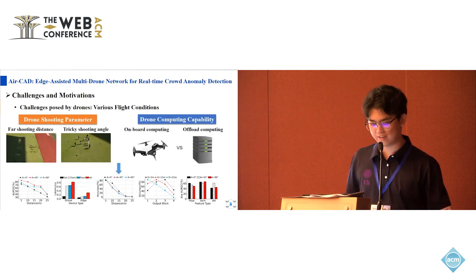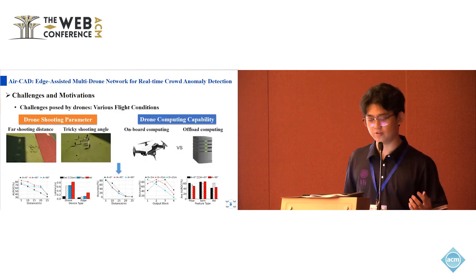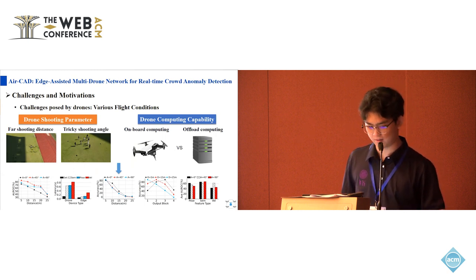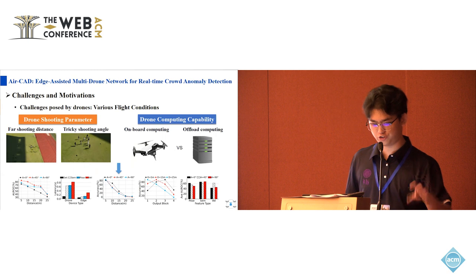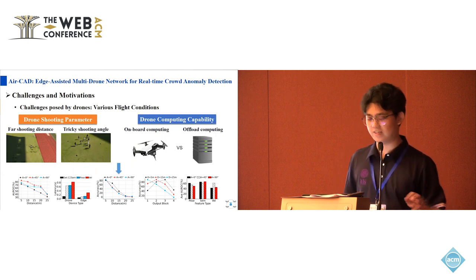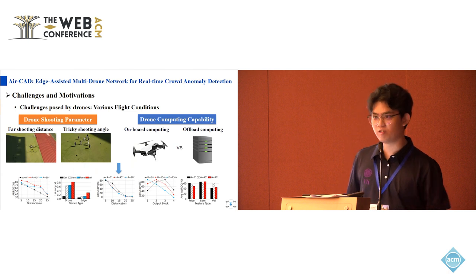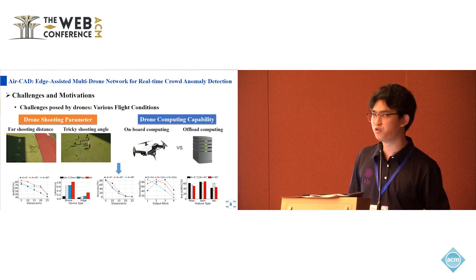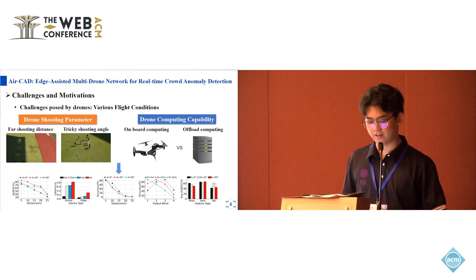However, the mainstream technologies are usually used for fixed cameras, which is not suitable for flight drones. Our motivational studies show the performance of mainstream technologies on drones. We use drones to shoot simulated crowds from different shooting distances and angles. Overall, the performance of CAD will decrease with increasing shooting distance and will change with changing shooting angles.